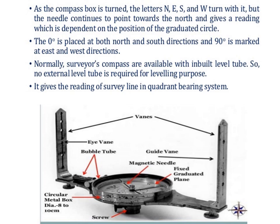As the compass box is rotated, the letters N, E, S, and W turn with it, but the needle continues to point towards north and gives a reading dependent on the position of the graduated circle. Zero degrees is placed at both north and south directions and 90 degrees is marked at east and west. Survey compasses are normally available with an inbuilt level tube, so no external level tube is required. It gives the reading of the survey line in the quadrantal bearing system, where the angle ranges from 0 to 90 degrees. Whereas in the case of the prismatic compass, the angle can range from 0 to 360 degrees.